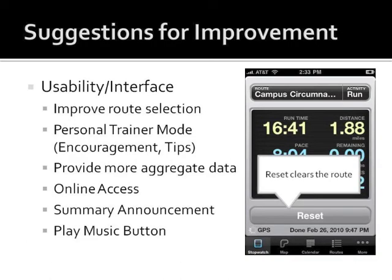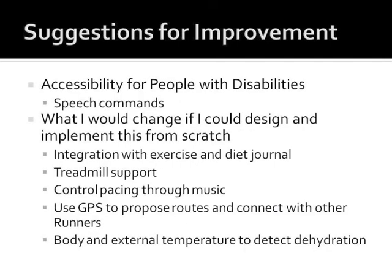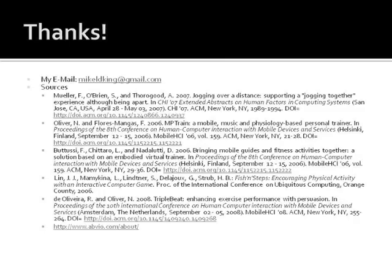With regards to usability and the interface, I would first improve the way in which the user selects a route. Many times I forgot to set the route before my run, which resulted in a loss of data and competitive feedback. I'd also add a personal trainer mode that would provide feedback in the form of friendly encouragements and tips. The interface should also display more aggregated data to give a better overview of the user's progress. Other features that would increase usability include added online access support, summary announcements after runs, a play music button on the main screen, and speech-based commands for better accessibility for disabled users. If I were designing Run Meter from scratch, I would integrate it with an exercise and diet journal, add treadmill support for indoor use, use music as the main pacing feedback mechanism, use GPS data to propose routes and connect users with other runners in the area, and monitor body and external temperature to provide hydration suggestions. Thanks for listening — if you have any feedback or suggestions, please email me.